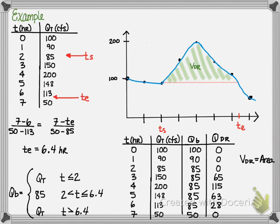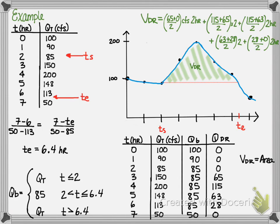So, the following depicts how to calculate the volume of the green area. The volume dr is equal to 65 plus 0 divided by 2 times 2 hours. We're going to repeat this for every area as shown.